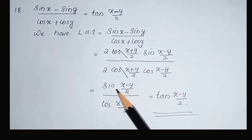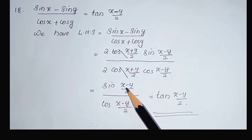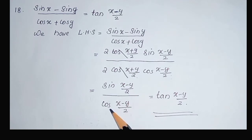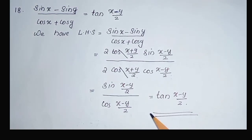We cancel these terms. Then we got sin((x-y)/2) divided by cos((x-y)/2), that is equal to tan((x-y)/2).